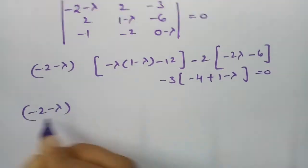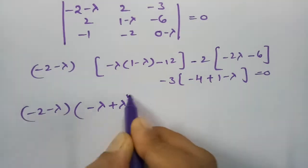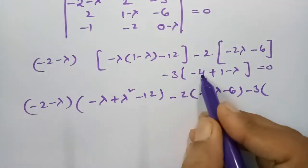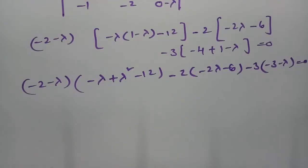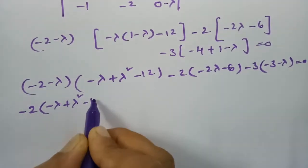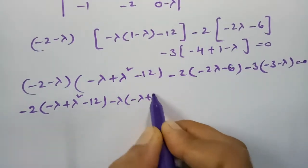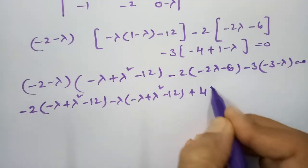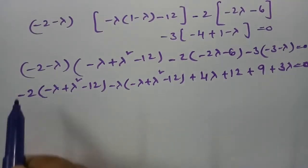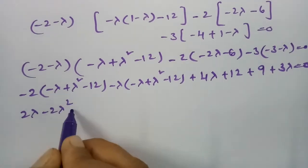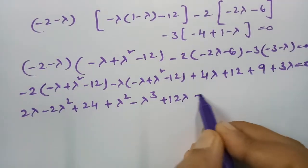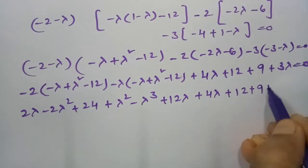Multiplying out: (−2−λ)(−λ + λ² − 12) gives 2λ − 2λ² + 24 + λ² − λ³ + 12λ. Then minus 2(−2λ + 6) gives 4λ + 12. And minus 3(−3 − λ) gives 9 + 3λ, all equal to 0.